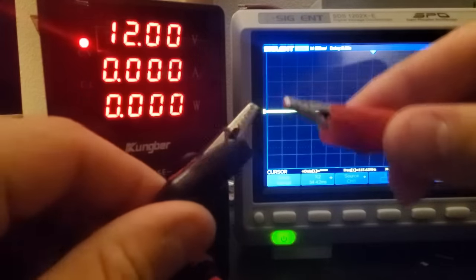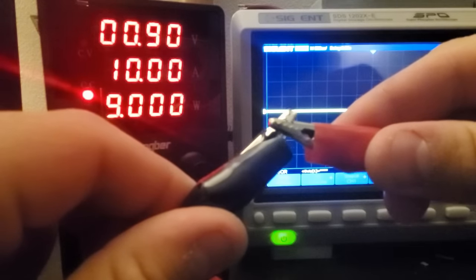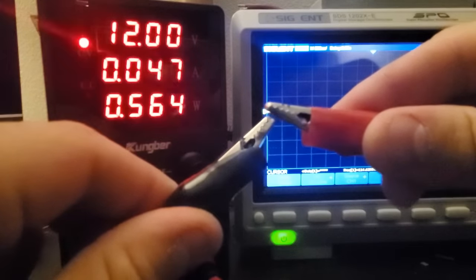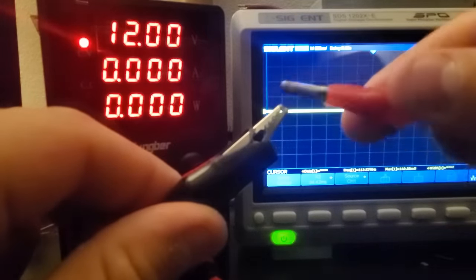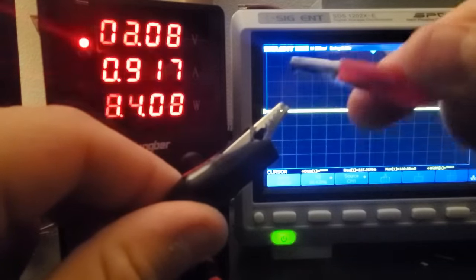If I short my power supply leads together, the output maxes out at 10 amps. If I tap them together, there's some tiny sparks from the supply's filter capacitor, but very little stored energy otherwise, because the leads have almost no inductance in them.